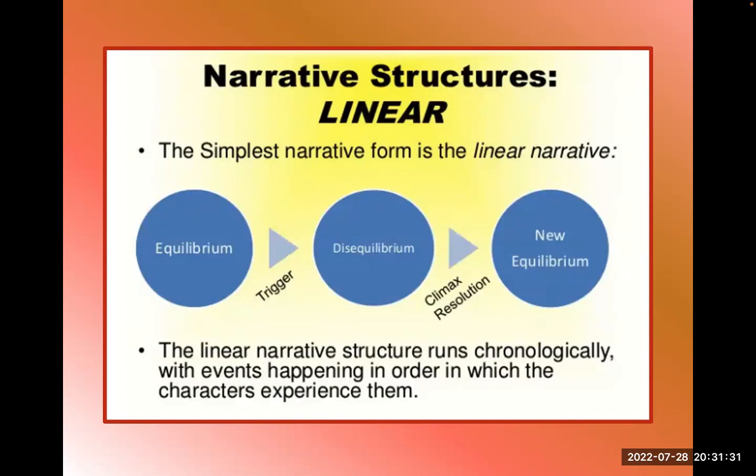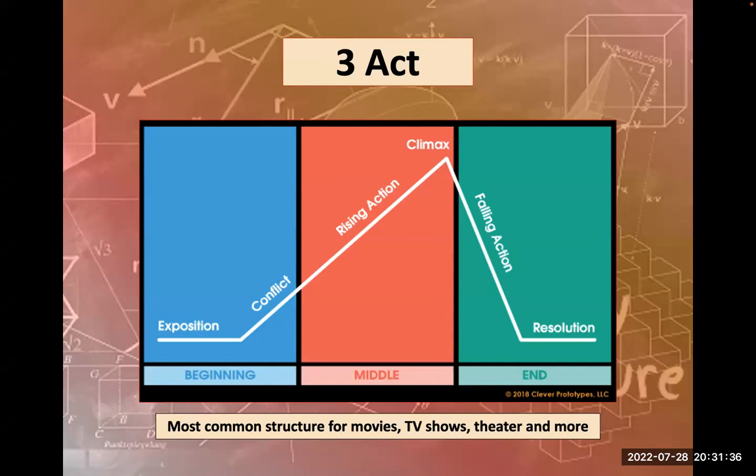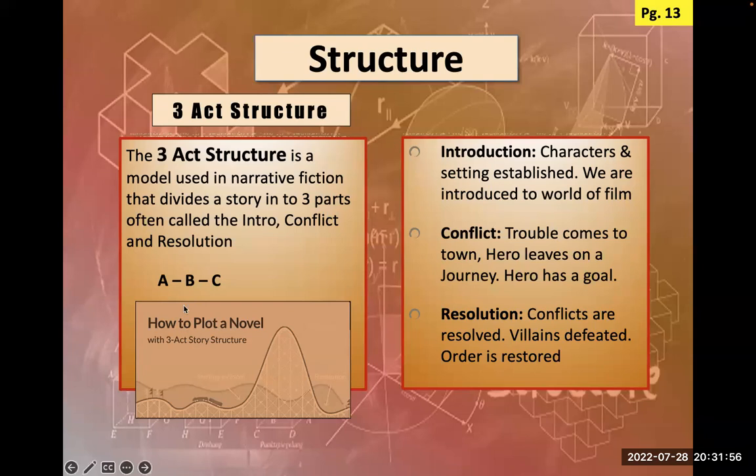Linear structure goes from equilibrium to disequilibrium — something happens, we're forced to change, forced into conflict — then we arrive at the new equilibrium. This brings us to the three-act structure, which lays over the linear structure very well. We have a beginning, middle, and end divided into three different acts. It's the most common structure for movies and even television shows.